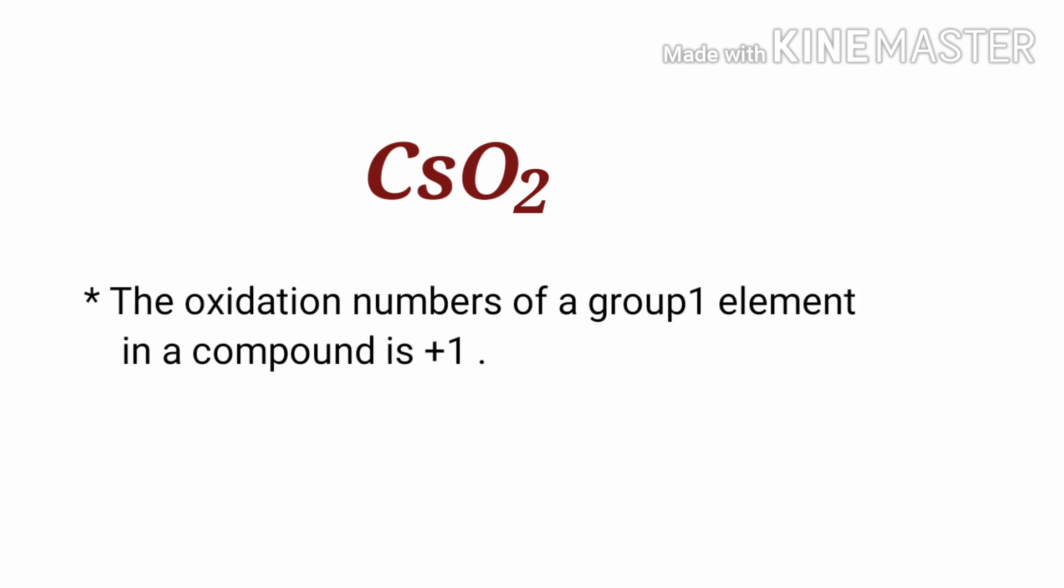By the rules of assigning oxidation numbers, the oxidation number of a group 1 element in a compound is plus 1. Cesium is a group 1 element, so the oxidation number of cesium is plus 1.